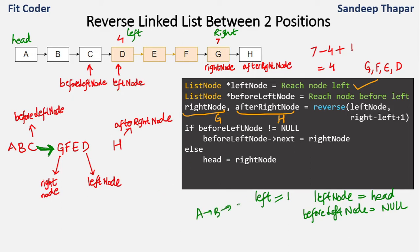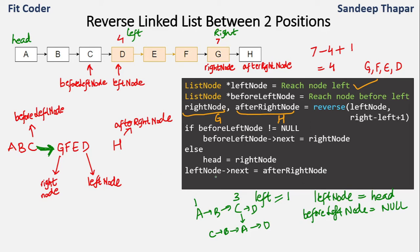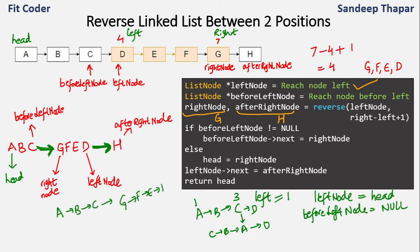For example, if the list is A, B, C, D and we reverse from position 1 to 3, then before-left node is null, so we go to the else branch and right node becomes the head — C becomes the head in that case. After handling this, we connect left node's next to after-right node: D's next is set to H. Finally, we return the head, and the complete list becomes A, B, C, G, F, E, D, H.